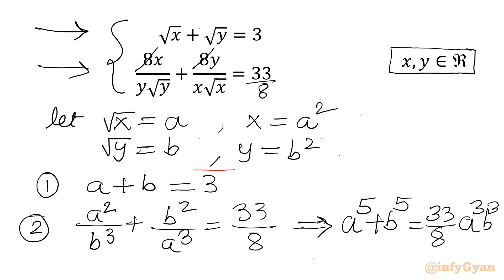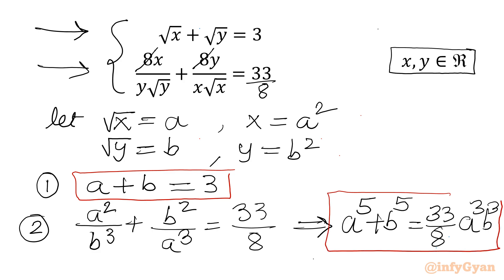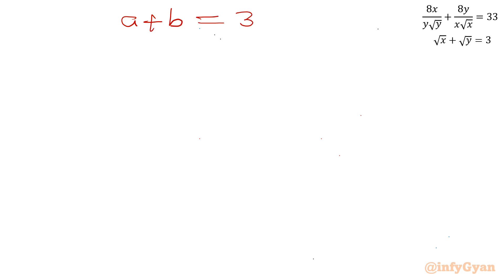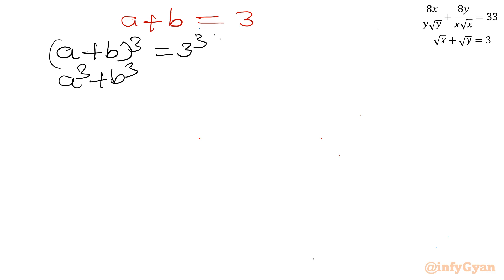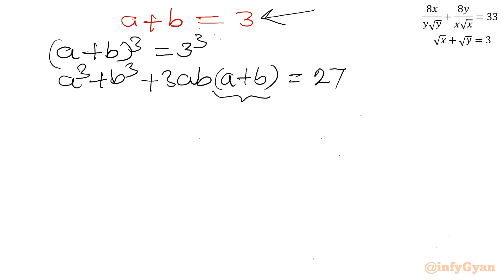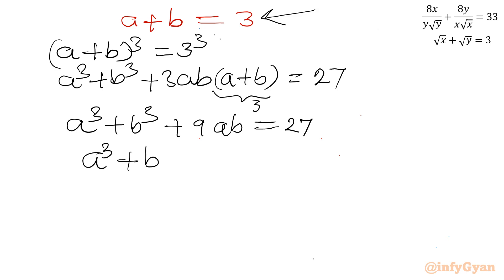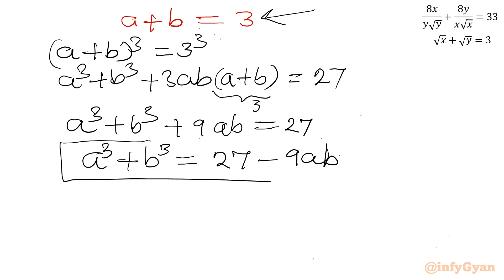Now let's solve this system instead of the radical system of equations. I will take a plus b equal to 3 and cube both sides: a plus b whole cube equal to 3 cubed. So a cubed plus b cubed plus 3ab times a plus b equal to 27. Since a plus b is 3, we get a cubed plus b cubed plus 9ab equal to 27, or a cubed plus b cubed equal to 27 minus 9ab. We will use this result directly.